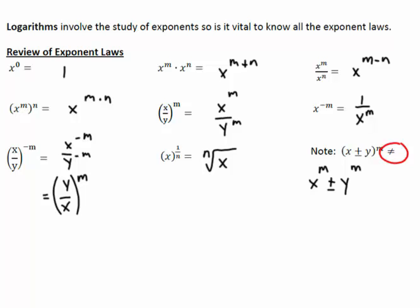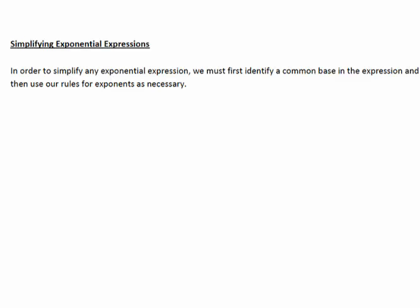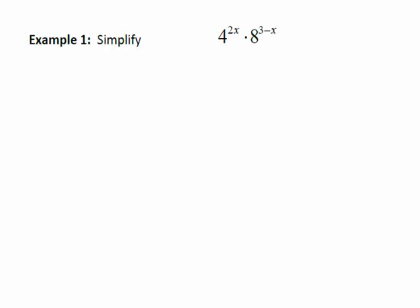We're going to use our exponent laws to simplify and solve an expression. To simplify, what we have to first do is create a common base for the expression, and once we have a common base, then we use all our rules for exponents. Let's look at an easy one: 4 to the 2x times 8 to the 3 minus x. We want a common base between 4 and 8 — it's pretty easy to see base 2, so we write 4 as 2 squared, still keeping the original exponent 2x.